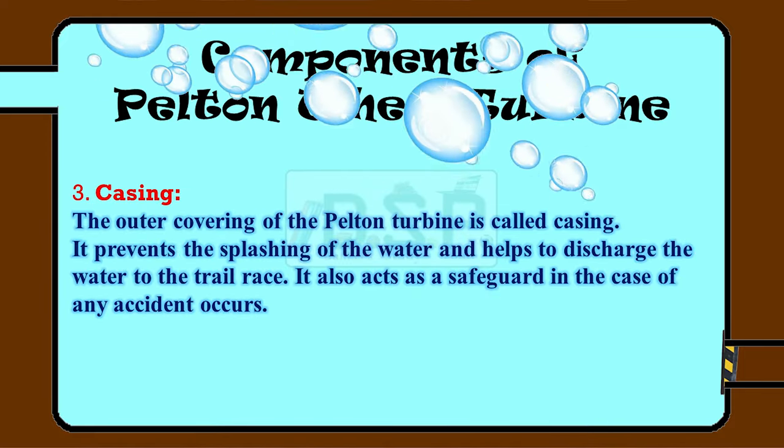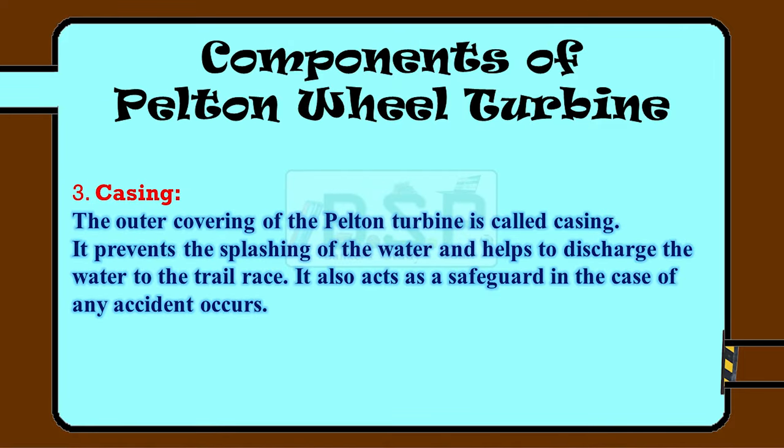The third part is the casing. The outer covering of the Pelton turbine is called the casing. It prevents the splashing of water and helps to discharge the water into a tailrace. It also acts as a safeguard in case an accident occurs.